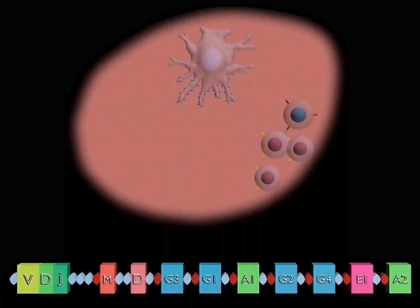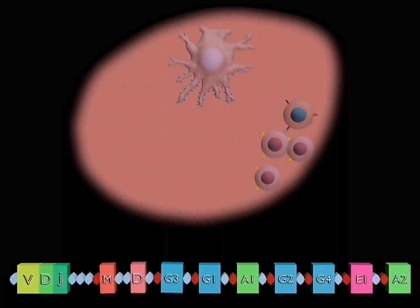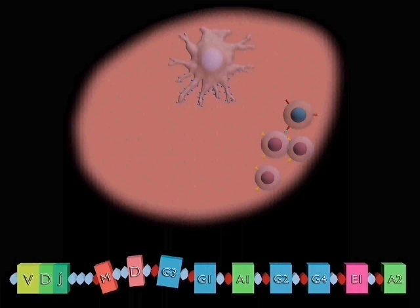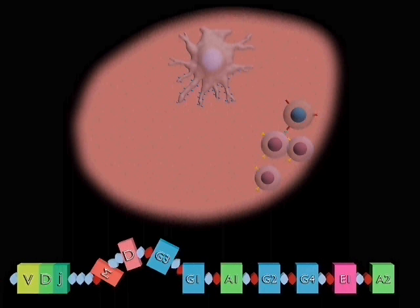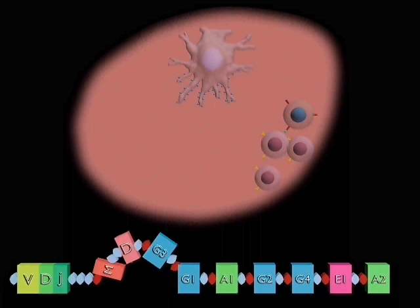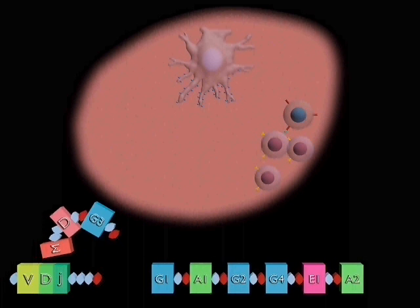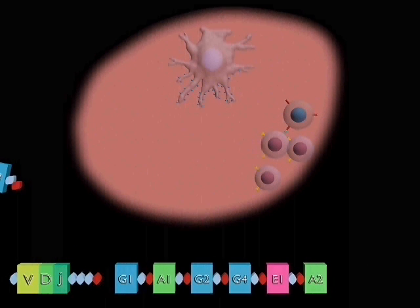The interaction with T cells also promotes immunoglobulin class switching. Look now at the heavy chain gene locus. The IgM-C gene is preceded by a switching region which corresponds to switching regions preceding the C genes for all the other immunoglobulin classes except IgD. Here we see the event which occurs as a B cell switches from making IgM to IgG1. The C gene for IgG1 replaces the C gene for IgM, placing it next to the VDJ gene.